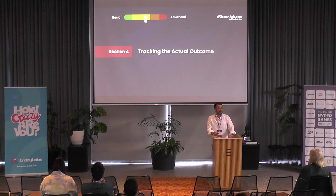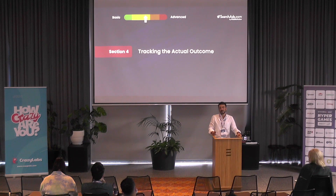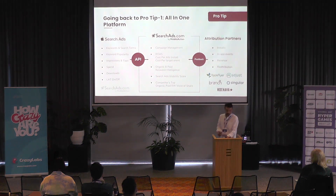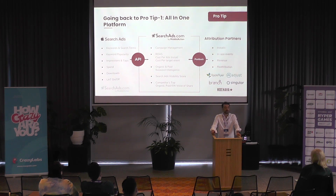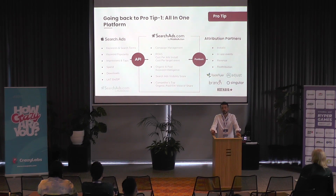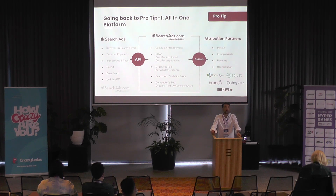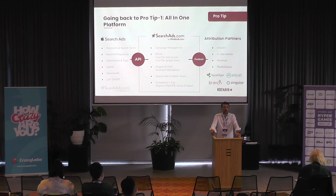Once we have the ideal structure and know which keywords to focus on, the next step is understanding if they're bringing value. Tracking the actual outcome is another story. Normally, you'll have your MMP — mobile measurement partner. At SearchAds.com, we bring your Apple Search Ads data and your MMP data into one dashboard. Once you do that, you'll be able to see which keywords or ad groups you're spending money on and what your return from them is, allowing you to optimize your campaigns accordingly.